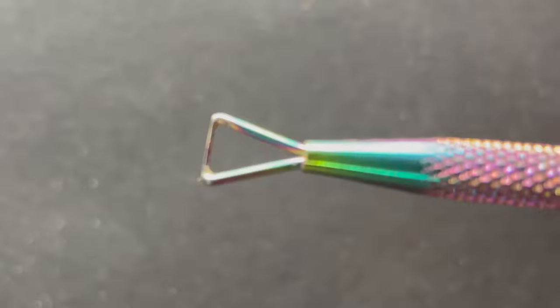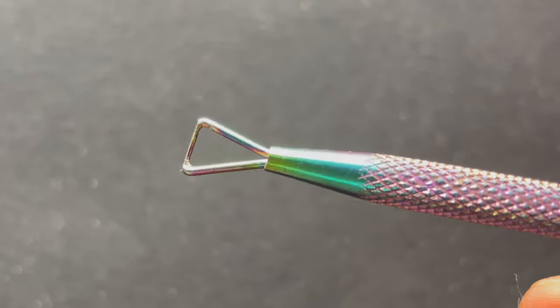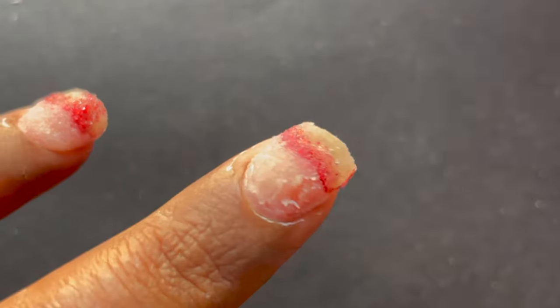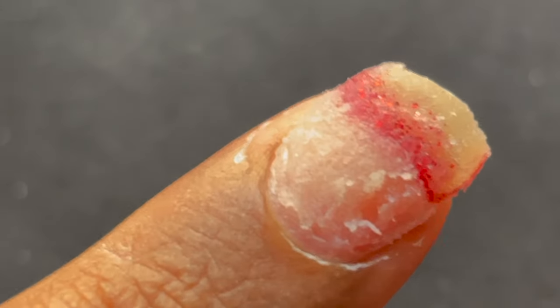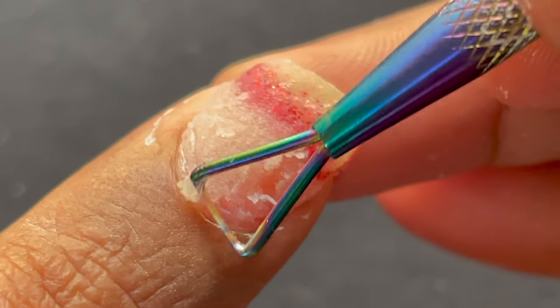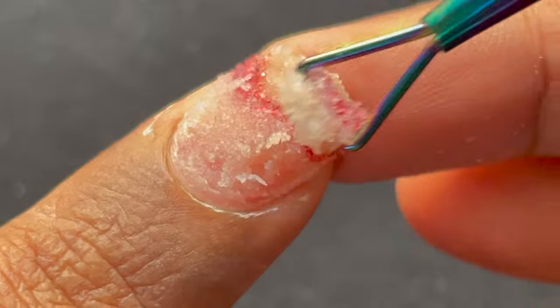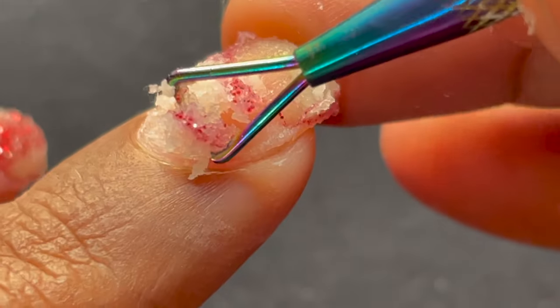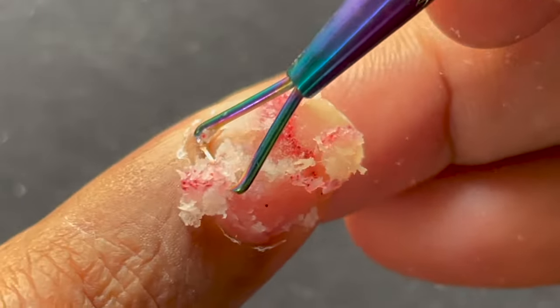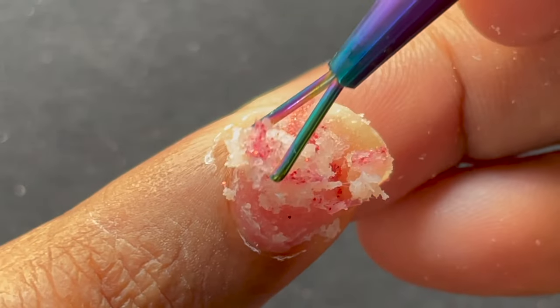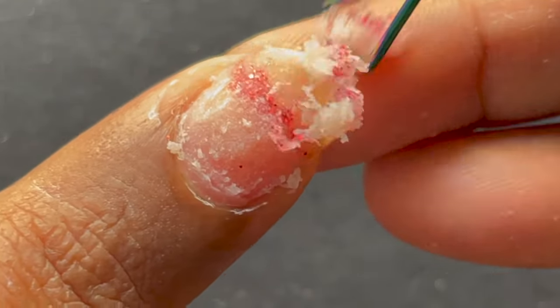To remove that melted acrylic powder, I'm using this tool. I got this from AliExpress. This basically scrapes that product from your nail surface. Always be gentle. Don't rush yourself. Don't just scratch off your natural nails.